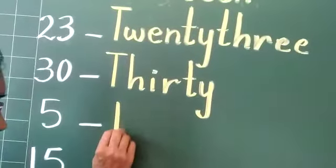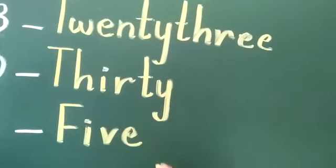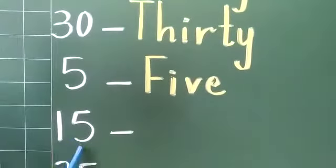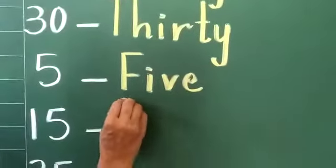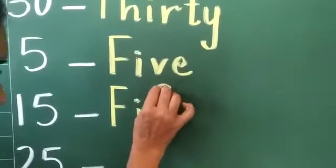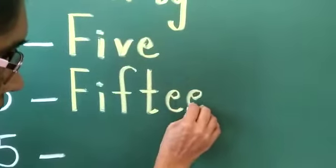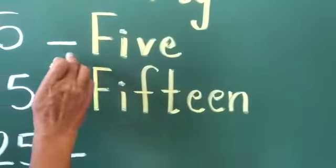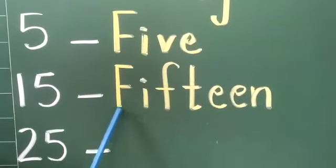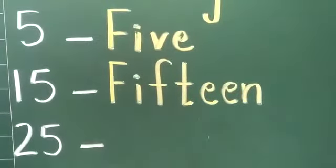5 — you are going to write the spelling of 5 here. I think you understood it, isn't it? How to write? 1, 5 — 15. You are going to write here the spelling of 15. F, I, F, T, E, E, N — 15. Don't get confused. The spelling of 5 is F, I, V, E. The spelling of 15 is F, I, F, T, E, E, N — 15.